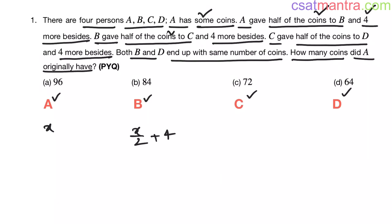Now, B gave half of the coins to C, half of the coins of what B has, and four more besides, plus 4. Simplifying this one, X by 4 plus 2 plus 4. Now this is equal to X by 4 plus 6.